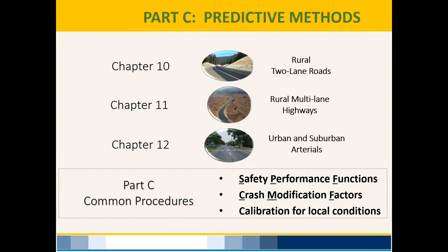Volume 2 of the highway safety manual is where you'll find Part C — the predictive methods. Part C only has three chapters: Chapters 10, 11, and 12, but Part C is the largest of all three parts. The three chapters cover safety performance functions and the specific crash modification factors used to predict crashes along different roadway types. Chapter 10 covers rural two-lane roads, Chapter 11 covers rural multi-lane highways, and Chapter 12 covers urban and suburban arterials.